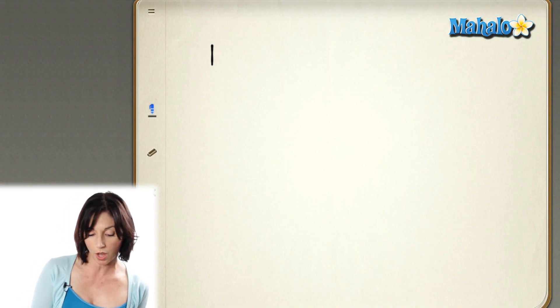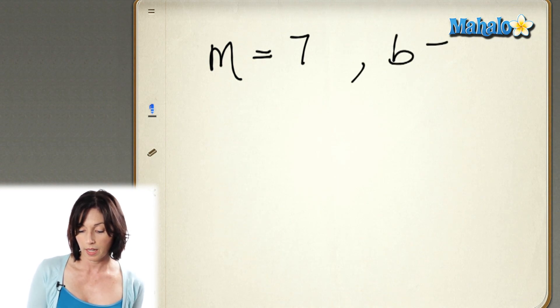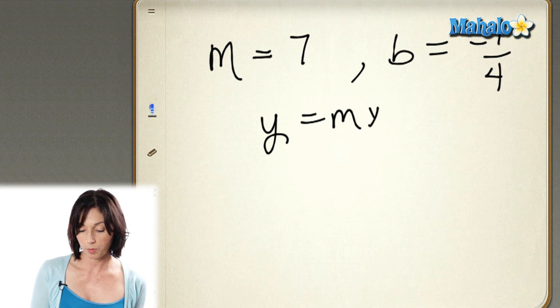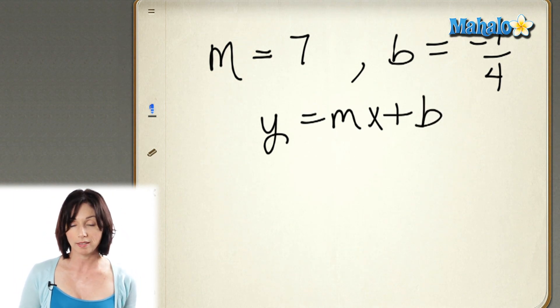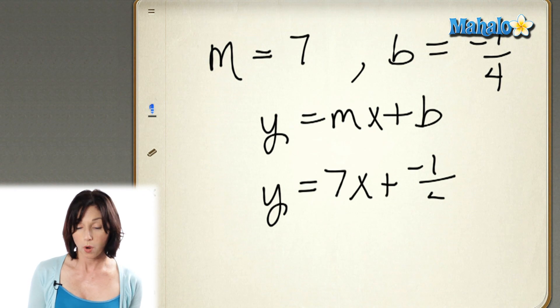So don't let the pluses and minuses throw you off. If it's a negative value, if you're subtracting, that means your b is a negative number. Now, if you're given a slope and a y-intercept, you can immediately write down the equation of the line. Let's say the slope is 7 and the y-intercept is negative 1 fourth. Using the standard form y equals mx plus b, the equation of this line is y equals 7x plus negative 1 fourth, or you can rewrite it as y equals 7x minus 1 fourth.